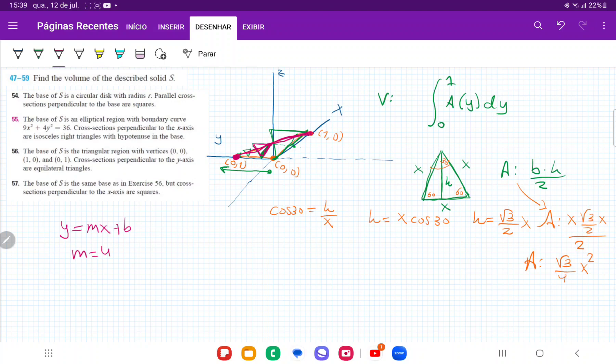So m is equal to y2 minus y1 over x2 minus x1. And in this case, it's y2, that is going to give us 0 minus 1, because that's (0,1). And then for x2, it's going to give us 1 minus 0. So basically, m is minus 1. Therefore, this equation is equal to y is equal to minus 1x and then plus b.